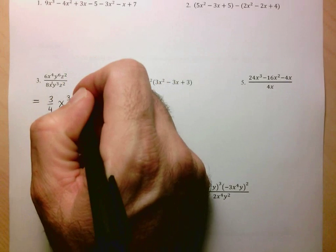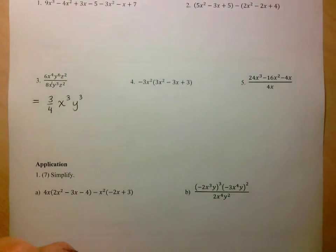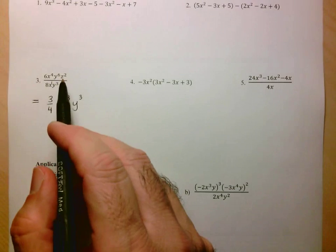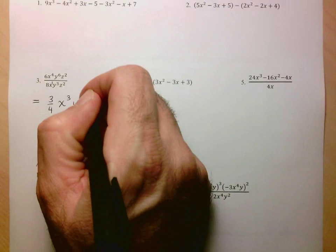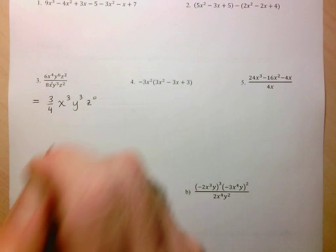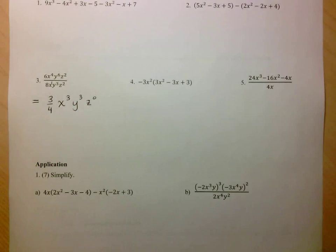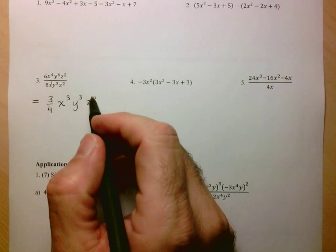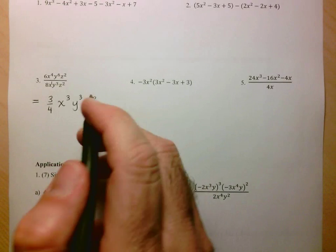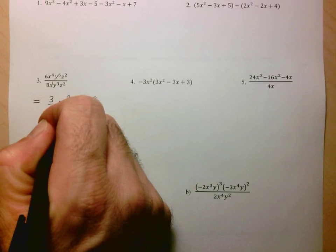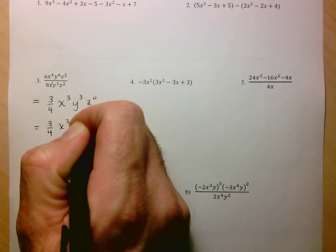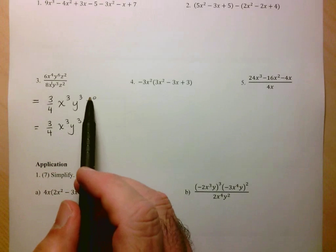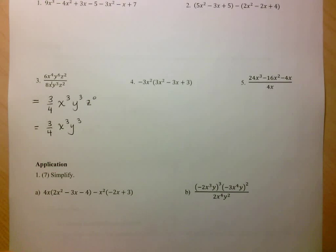We're left with y cubed. Then we go to the z's — same base, so 2 minus 2 is 0, giving z to the 0. By convention, we don't write z to the 0 because we know it equals 1. So your final answer should look like 3 quarters x cubed y cubed. If you do write z to the 0, you would possibly lose a mark in the communication section.